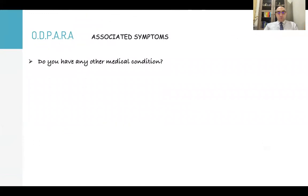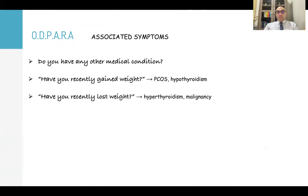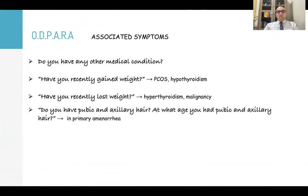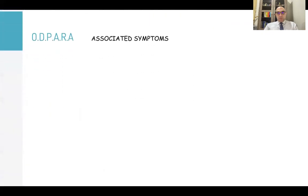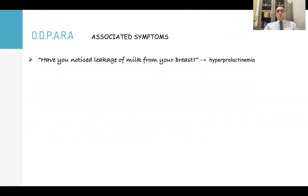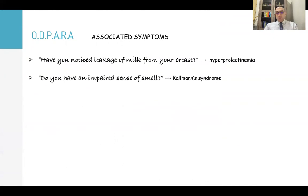Associated symptoms are very important. Ask: 'Do you have any other medical conditions? Have you recently gained weight?' — as in hypothyroidism or polycystic ovary syndrome. 'Have you recently lost weight?' — as in hyperthyroidism or malignancy. 'Do you have pubic and axillary hair? At what age did you develop pubic and axillary hair?' — very important in primary amenorrhea. 'Have you noticed most of your friends are taller or developed breasts and pubic hair before you?' — as in Turner's syndrome. 'Have you noticed leakage of milk from your breasts?' — galactorrhea in hyperprolactinemia. 'Do you have an impaired sense of smell?' — as in Kallmann's syndrome.